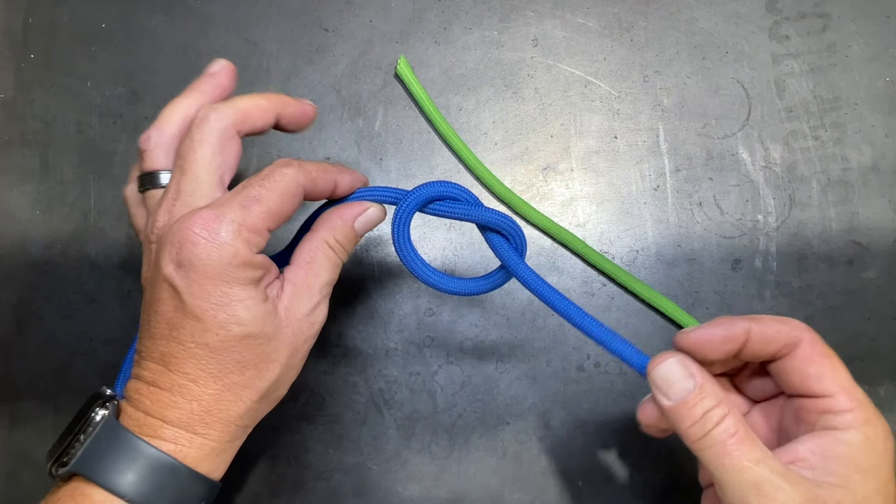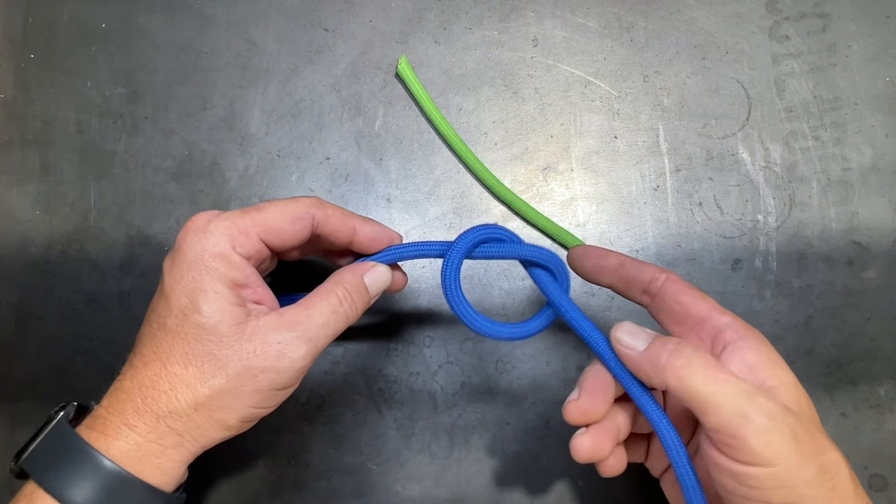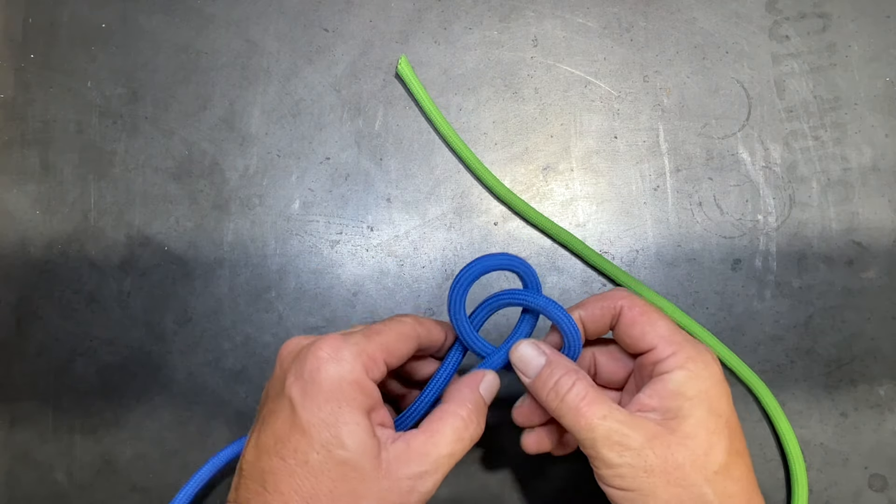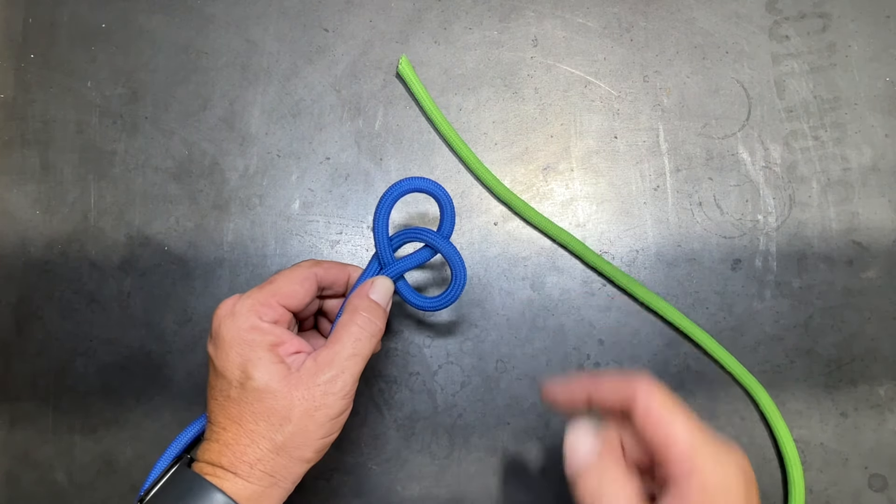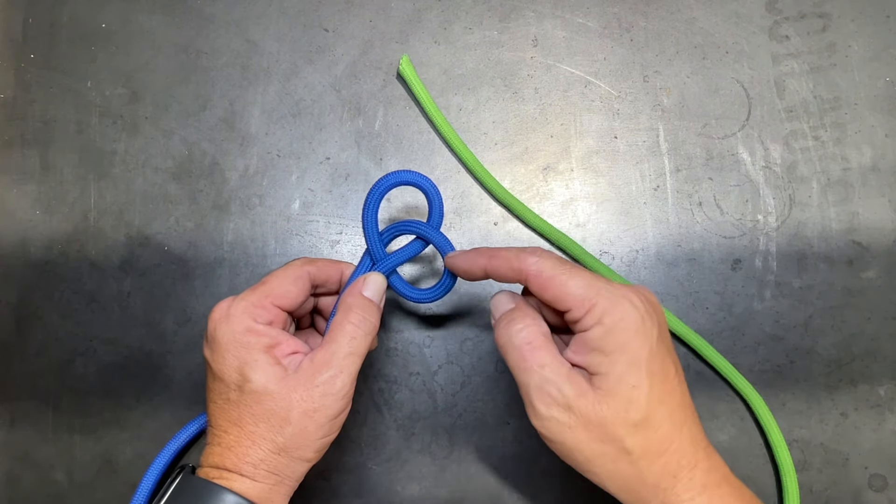So we'll just shorten that up a bit, make our loose overhand, pinch our standing end and our working end back to back, and we'll open up our overhand knot to give us that upper and lower loop.